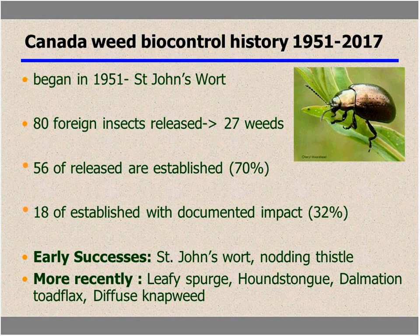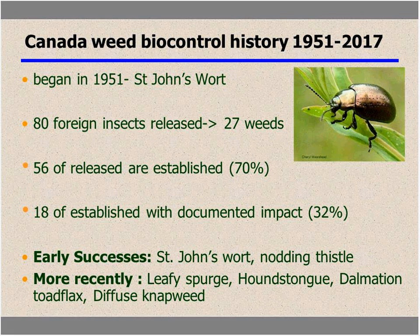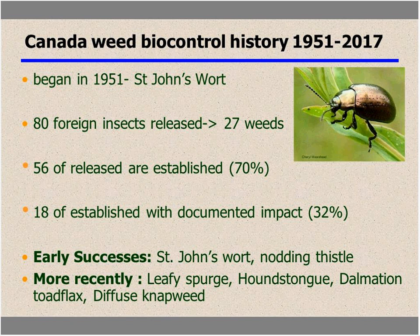Some weed biocontrol history in Canada: it began in 1951 targeting St. John's wort with Chrysolina leaf feeders. Since that time there have been about 84 foreign insects released targeting 27 different weeds. 56% of those released have established, meaning they're present in Canada, and of those, 18 have had a documented impact. There were early successes with St. John's wort, nodding thistle, and more recently with leafy spurge, houndstongue, dalmatian toadflax, diffuse knapweed, and also purple loosestrife.